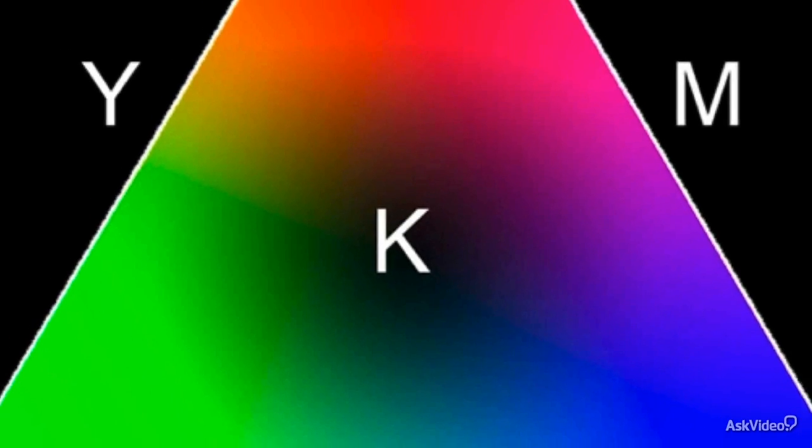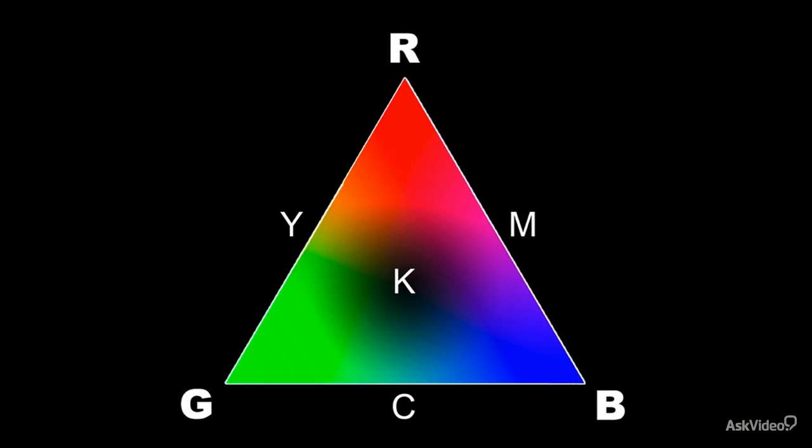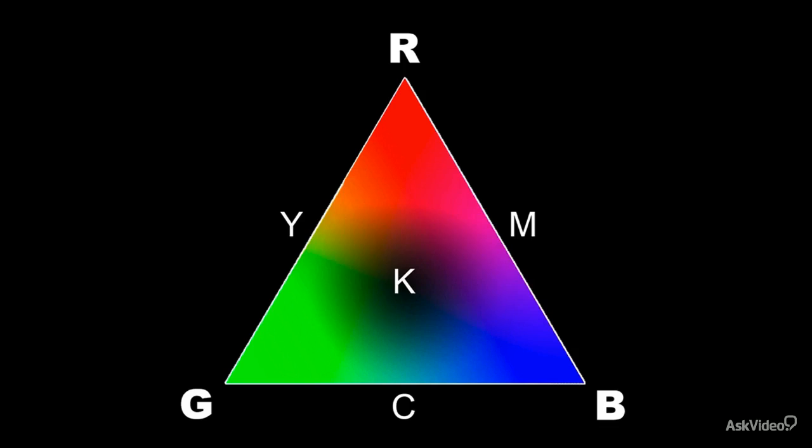As I said before, the black is referred to as K in CMYK, because in print shops it used to be called key. It's the key color that contained the structure of the job, the outlines, the borders, and so on. So it became known as the color everything else keyed to, hence CMYK.